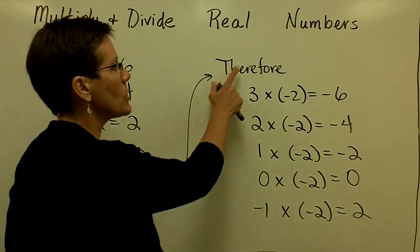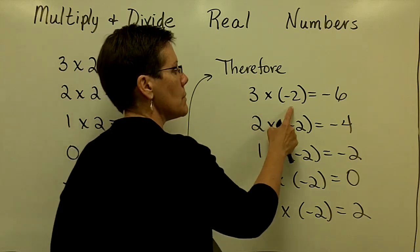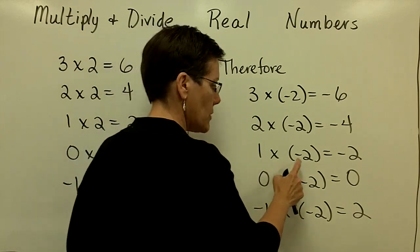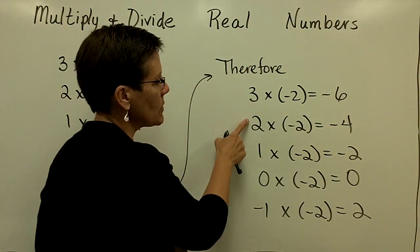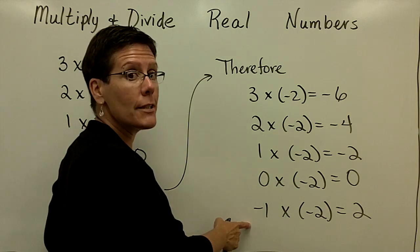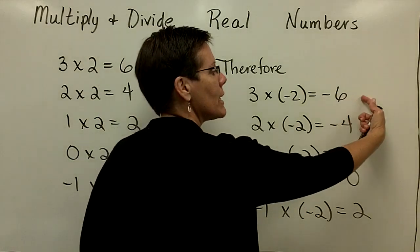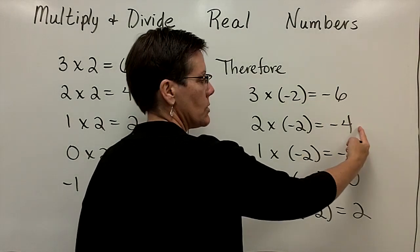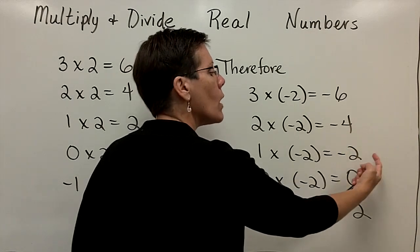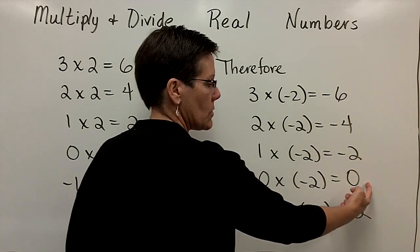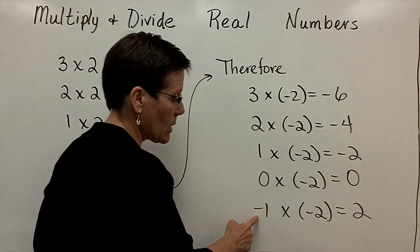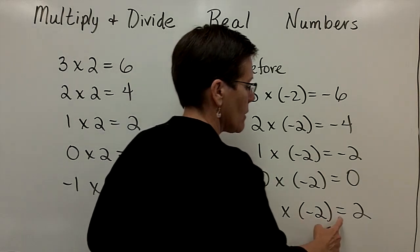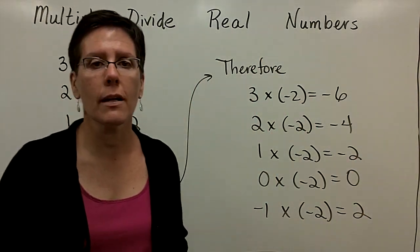Once I knew that, I could say that since a positive times a negative is a negative — and again positive times a negative is a negative — and I reduce this first factor by 1 every time, I see that my answers are going up by 2 each time. From negative 6, I go up by 2 to negative 4, then up by 2, and up by 2 to 0. So when I decrease that factor by 1 again, I discover that a negative times a negative would indeed be a positive because of this pattern.